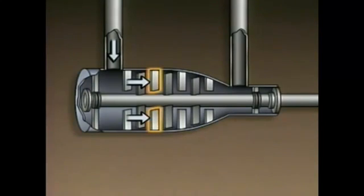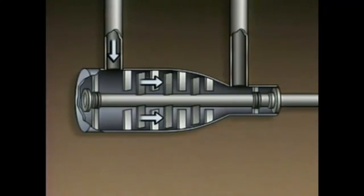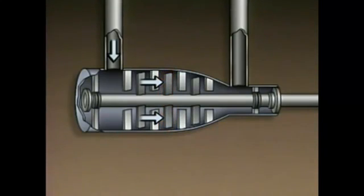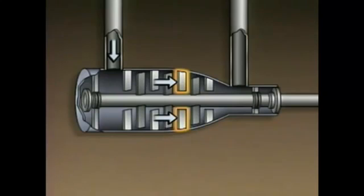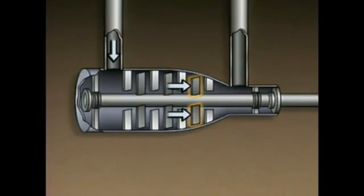In some cases, the stationary blades can also be opened and closed to help control gas flow. As the gas passes by the stationary blades, it slows down, which increases its pressure. After passing the stationary blades, the gas contacts the second set of rotating blades, where its velocity is increased again. From these rotating blades, the gas moves by another set of stationary blades, where the gas slows down again, increasing its pressure even more. The gas is then directed toward the next set of rotating blades. This process continues as the gas moves through the compressor and then out through the discharge line.